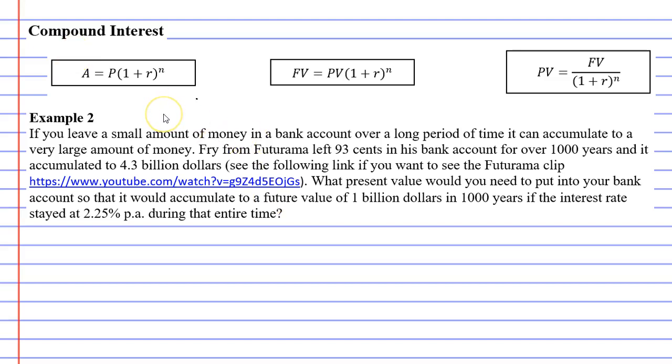So let's say we want a future value of $1 billion. Now, $1 billion has nine zeros. Okay, our interest rate is 2.25% per annum.